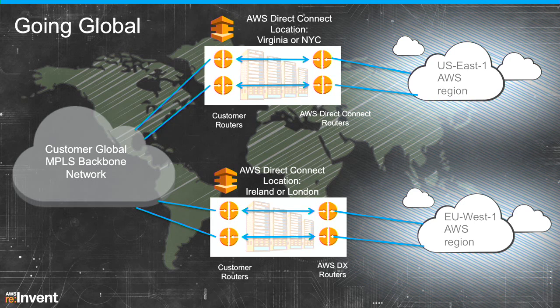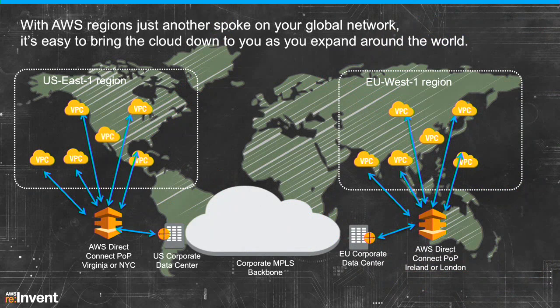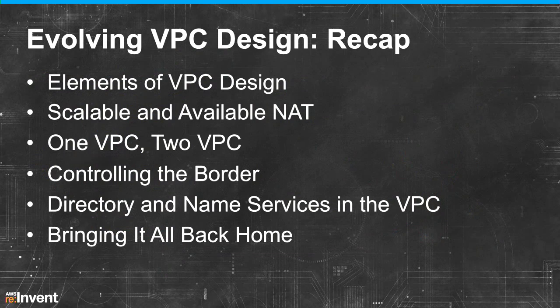And there you go — global VPC domination. I just realized this slide looks like Missile Command. That was not intentional, but I like it. Here's all we've covered — a lot of material, thank you for your patience. One thing to mention: VPC is free. CloudFormation is free. The only VPC cost is a port charge for VPN connections: $0.05 per hour for active VPN tunnels. Beyond that, all the features and functionality we discussed are free.